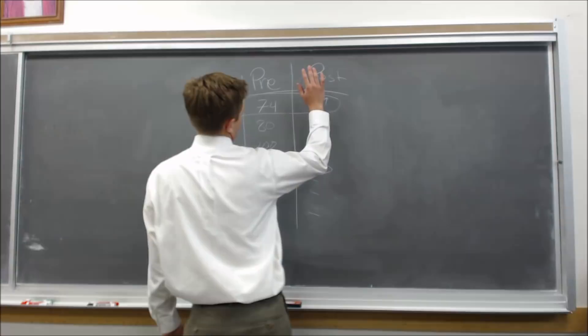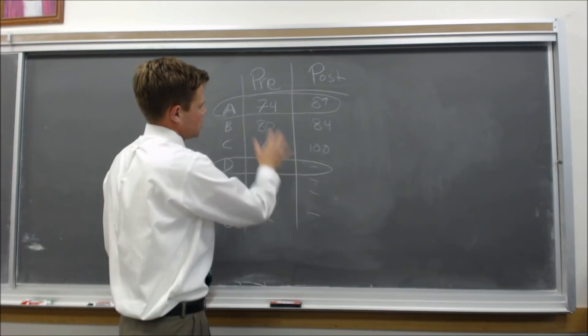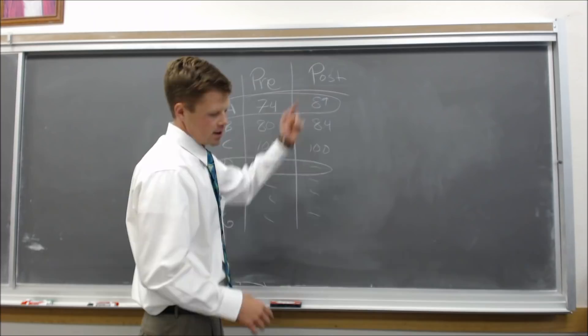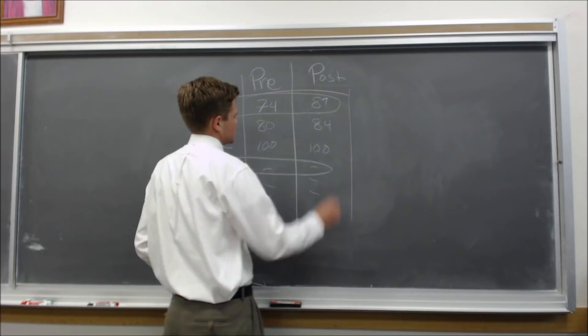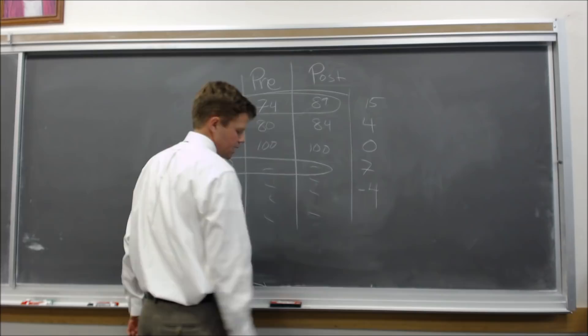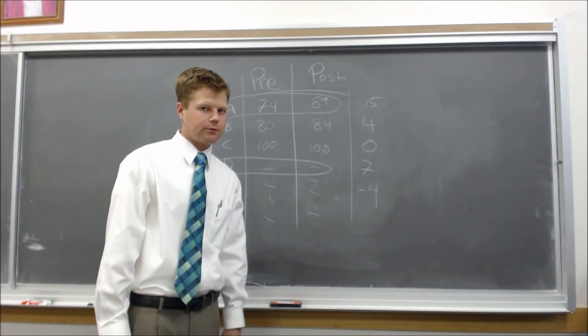In a regular T-test, you'd just ask what's the average pre- or post-test score. But in a matched pair, you want to compare them. Because of that, we compare the differences — we make a third column showing what the difference is between the scores. So we'd have a difference of 15, a difference of 4, a difference of 0, maybe a difference of 7, maybe this person went down 4. Then you run your statistics on that last column. That's the main difference between matched pair and a regular T-sample.